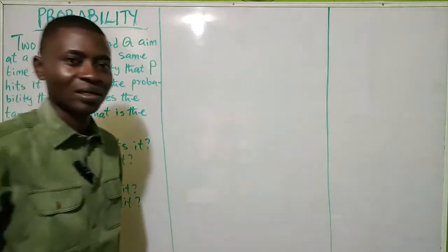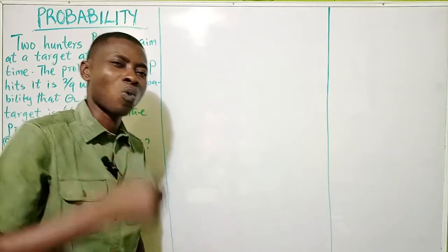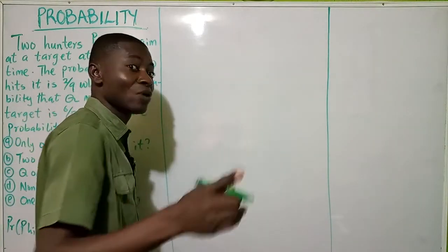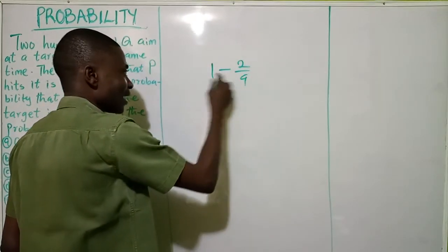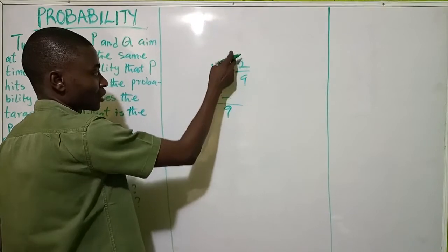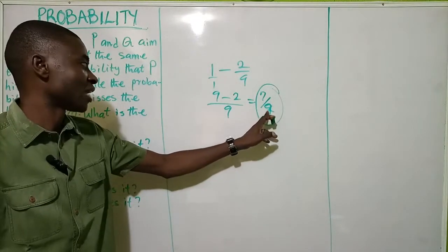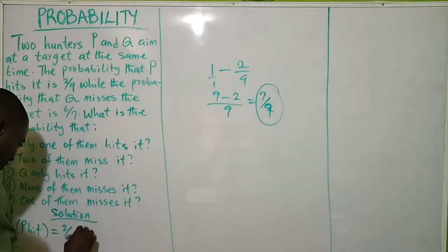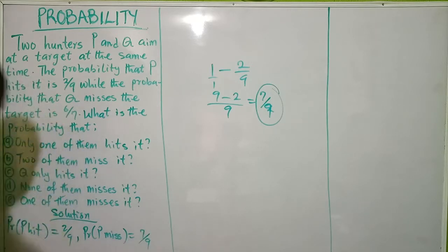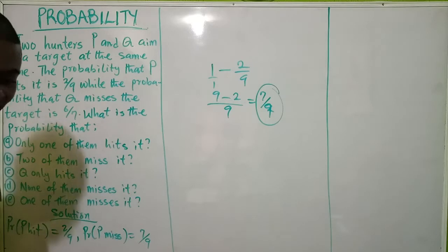Now if the probability that P hits the target is 2 over 9, what is the probability that P will miss the target? Remember, if the probability of something occurring is A, the probability of that same thing not occurring is 1 minus A. So the probability that P misses the target is 1 minus 2 over 9, which equals 7 over 9. So the probability that P misses the target is 7 over 9.